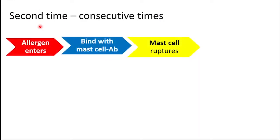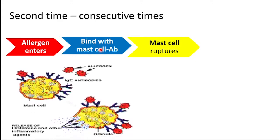When allergens enter into the body of a sensitized person — that means when they enter the second time or consecutive times — these allergens directly bind with the mast cells to which antibodies are already attached. As soon as this happens, the mast cell ruptures. The rupturing of mast cells releases a chemical called histamine.